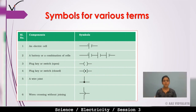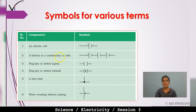Now let's look at the symbols for these circuit components. The electric cell symbol has one long line and one short line — the long one represents the positive terminal and the short one represents the negative terminal. A battery is a combination of cells, so its symbol shows multiple cell symbols connected together.